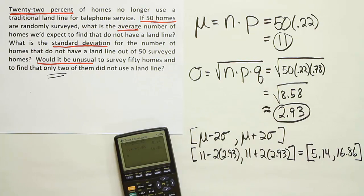What this is telling me is that the typical or usual number of homes that I will find out of 50 that do not have a landline in their house are somewhere between 5.14 and 16.86 homes. You could ask yourself questions like, for example, would it be unusual to find 10 homes that don't have a landline? You'd say no, that's not unusual because 10 is inside the interval.